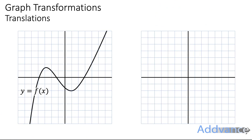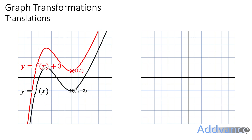We've got a curve here, y equals f of x, and we're going to focus on the coordinate (1, -2). If we add 3 to the equation of this curve and then add 3, it moves the entire curve up by 3 squares.